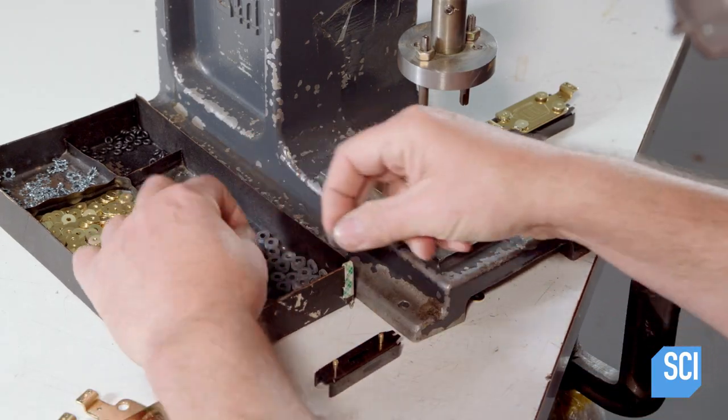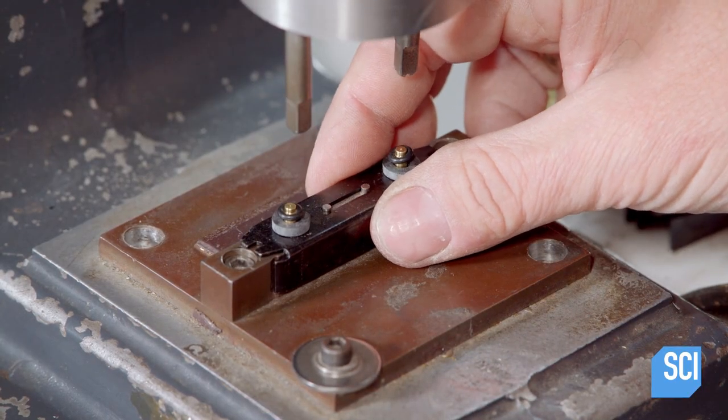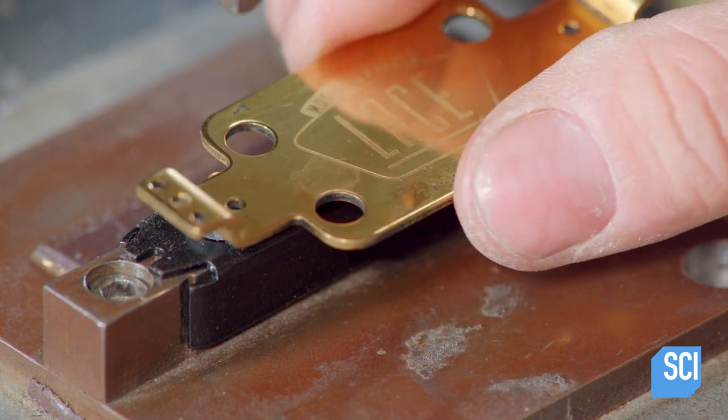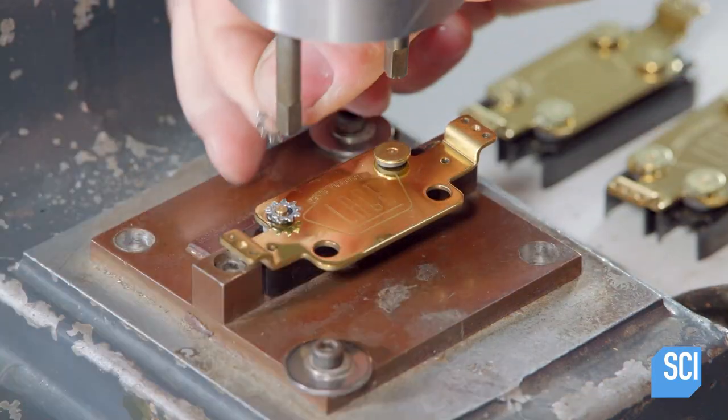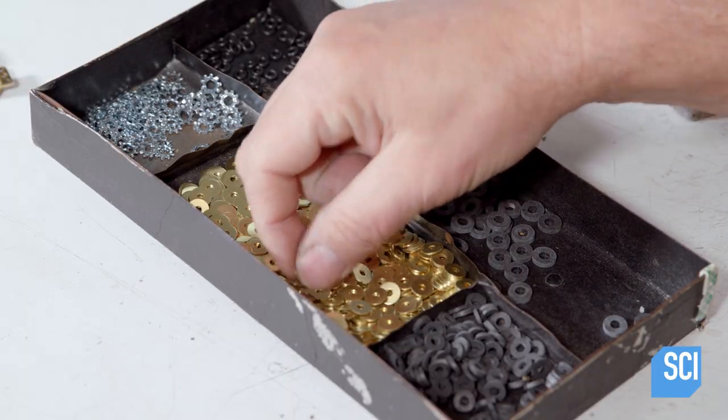He slides rubber and steel washers over the protruding pins. The washers will stabilize the assembly and prevent feedback. He mounts a brass plate to the pins and places more washers on the pins to electrically ground the assembly.